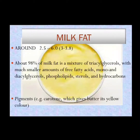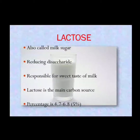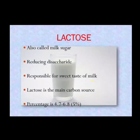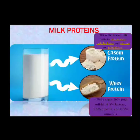Moving on to lactose — the only source of sugar in milk is lactose, and it is the only source of carbon obtained from milk. It is a reducing disaccharide and is responsible for the sweetish taste of milk. The percentage of lactose ranges from 4.7 to 6.8 percent, with the exact percentage generally being around 5 percent.